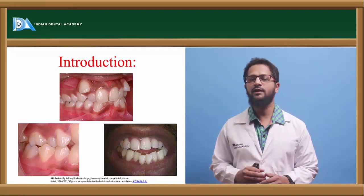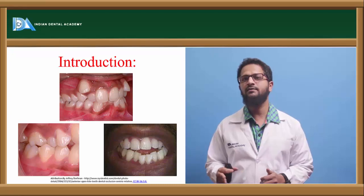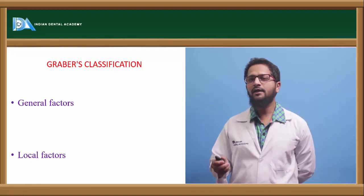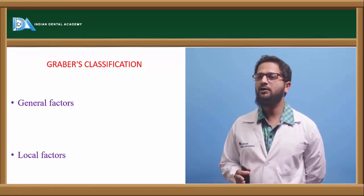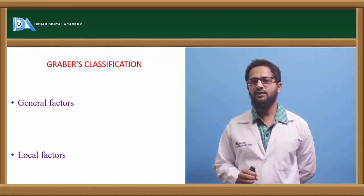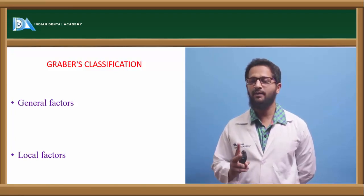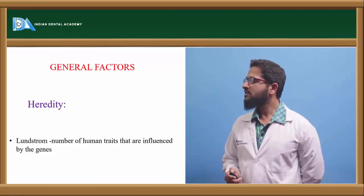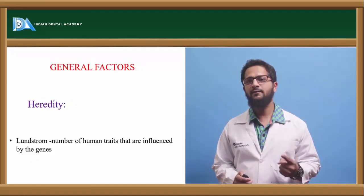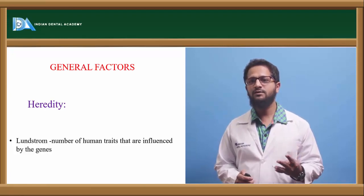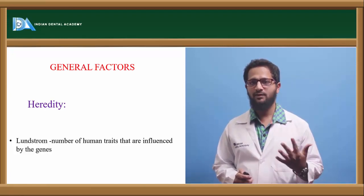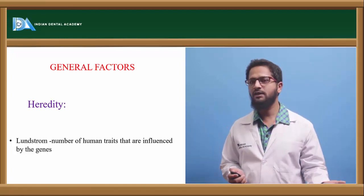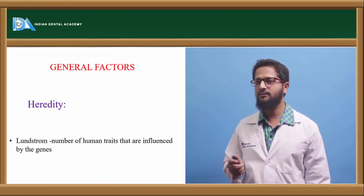Today we will be dealing with the etiology of malocclusion — what are the various causes of malocclusion. There are a number of classifications, but the most commonly used is Graeber's classification, which classifies malocclusion into two main categories: general factors and local factors. General factors include heredity, congenital, environment, predisposing metabolic and climatic diseases, dietary deficiencies, abnormal pressure habits, posture, and trauma.